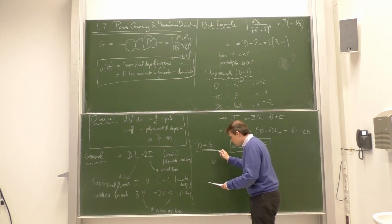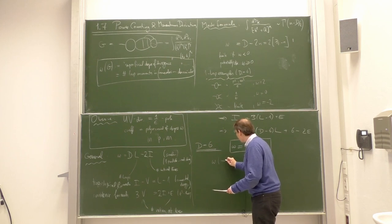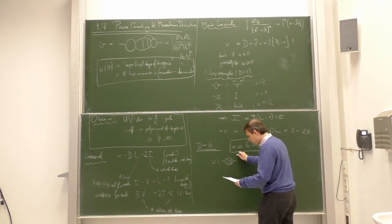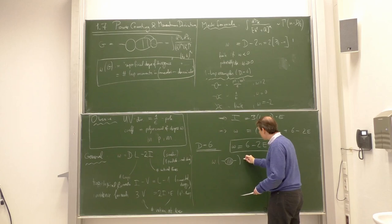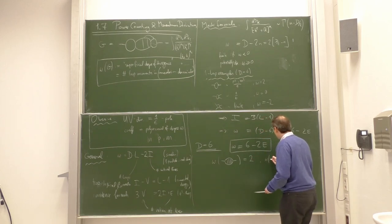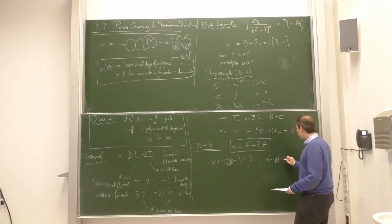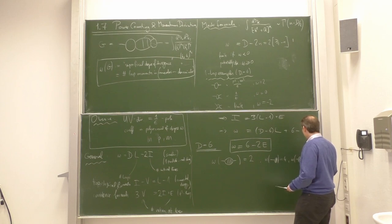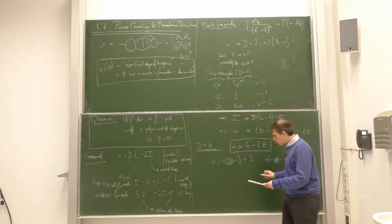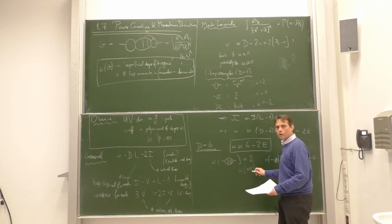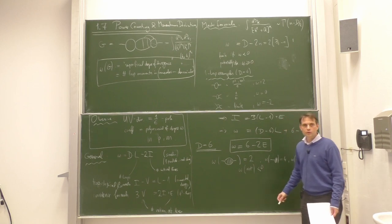We can therefore state: omega of any self-energy diagram, no matter how many loops, is always 2. Omega of any tadpole diagram, no matter how many loops, is always 4. Omega of any three-point function, no matter how many loops, is always 0. And omega of the rest, no matter what, is always smaller than zero.